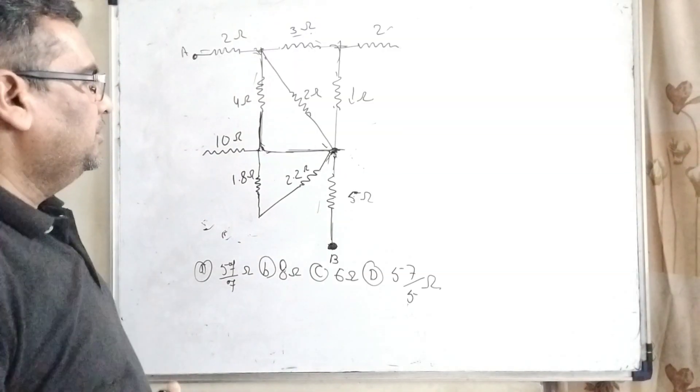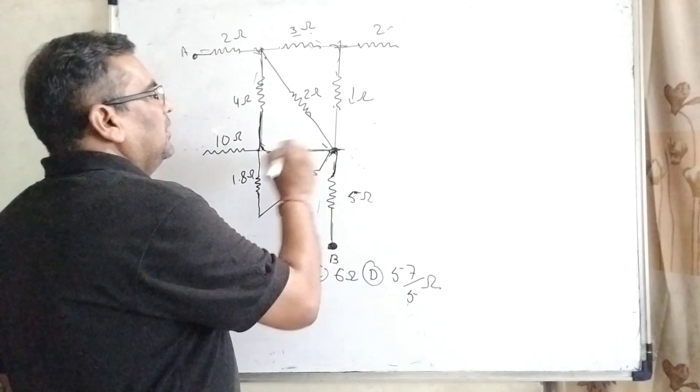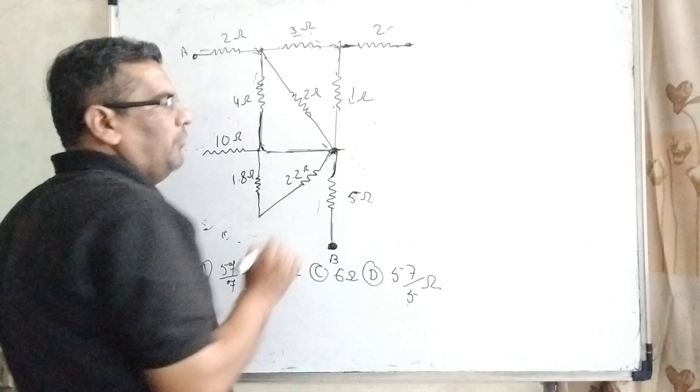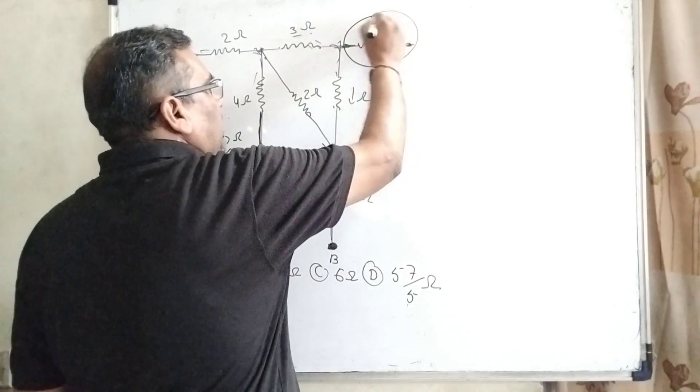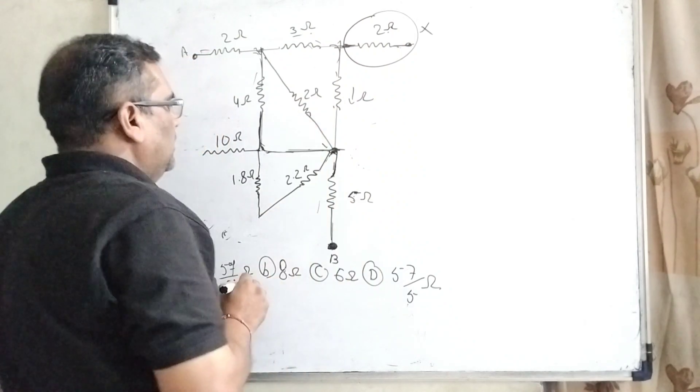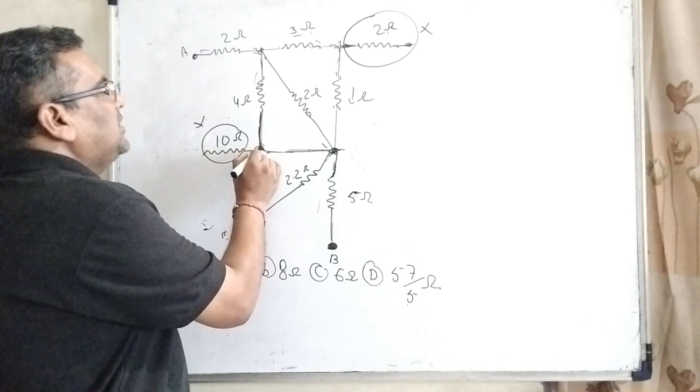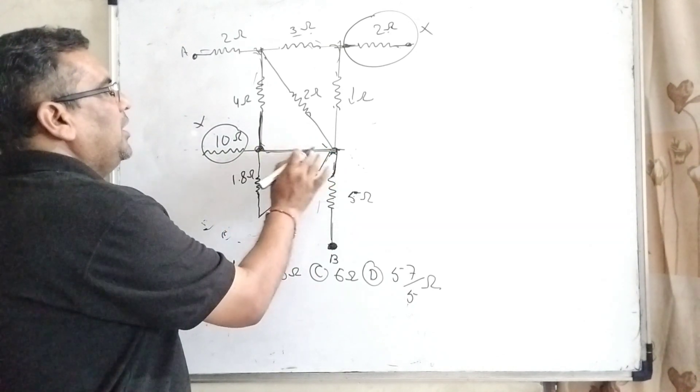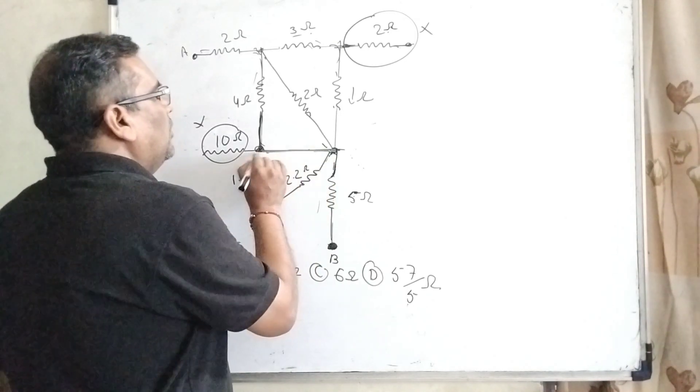Before solving this question, keep these things in your mind that when circuit is open, then no any current will flow. So here this can be neglected, this 2 ohm, here 10 ohm can be neglected. And now you can see here these connecting wires, there is no any device means resistance or capacitor is present in this.